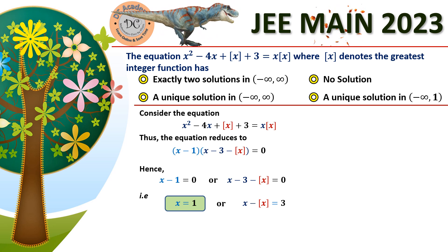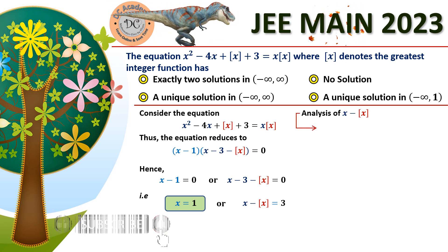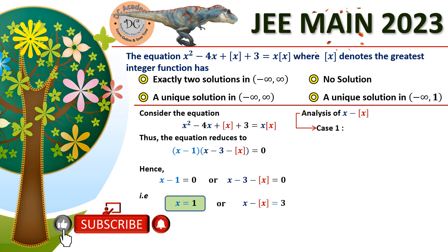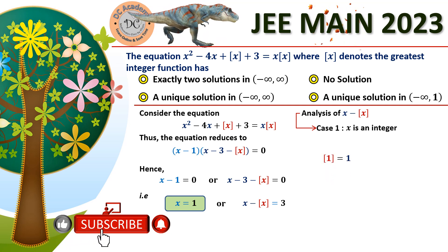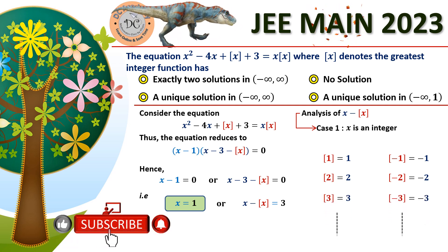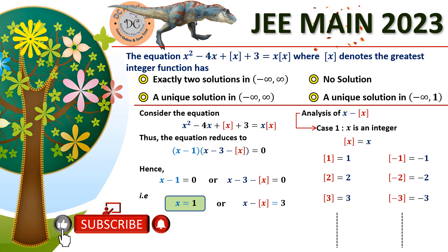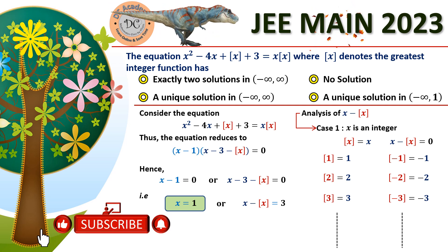To analyze x minus box(x), we consider Case 1: x is an integer. When x is an integer, box(x) equals x — for example, box(1) equals 1, box(minus 1) equals minus 1, box(2) equals 2, and so on. Therefore when x is an integer, x minus box(x) is always equal to zero.